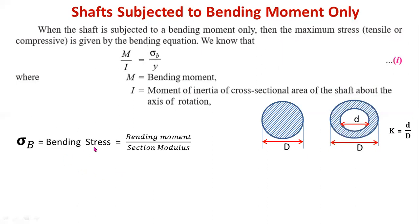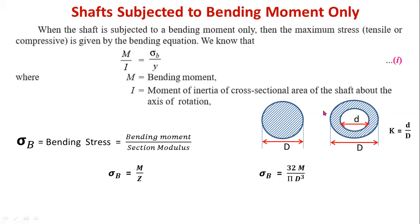Bending stress equals bending moment divided by section modulus: σ_B = M/Z, where Z = I/Y. For a solid circular shaft, σ_B = 32M / (πD³), since Z = πD³/32. For a hollow shaft, σ_B = 32M / (πD³(1 − K⁴)), and section modulus Z = πD³(1 − K⁴)/32, where K = d/D. These are the important formulas to determine bending stress in shafts.